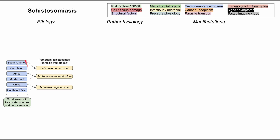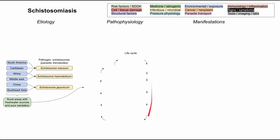It's important to note that you don't get schistosomiasis everywhere in these regions — it's usually found in rural areas with fresh water sources and poor sanitation. Fresh water and poor sanitation will become relevant as we talk about the life cycle of schistosomiasis, filling in the blanks to understand how it infects humans, how it spreads, and how it eventually causes manifestations.